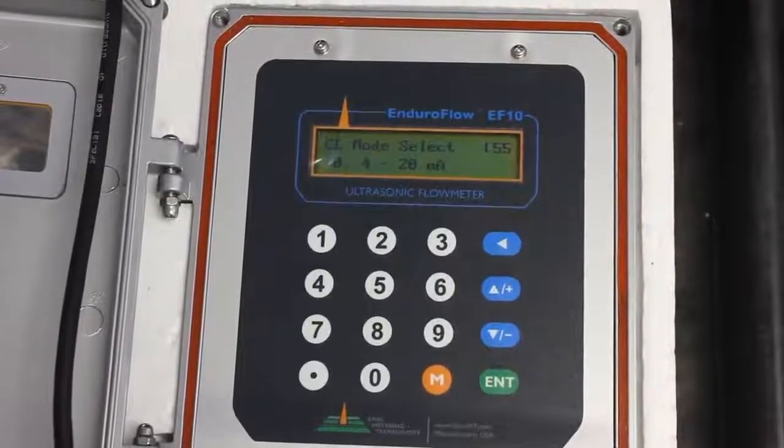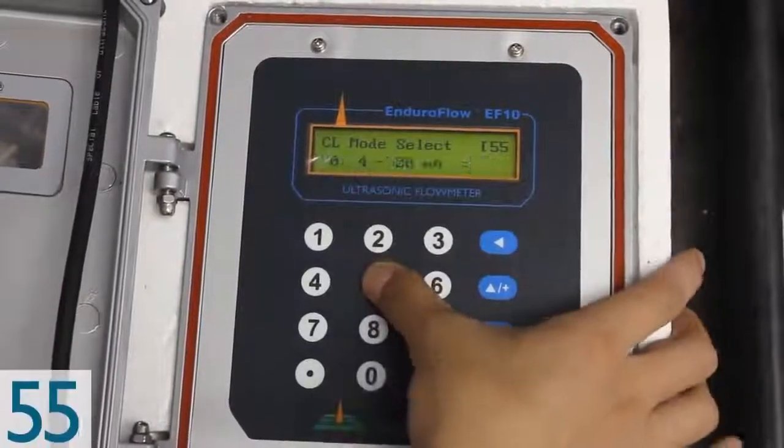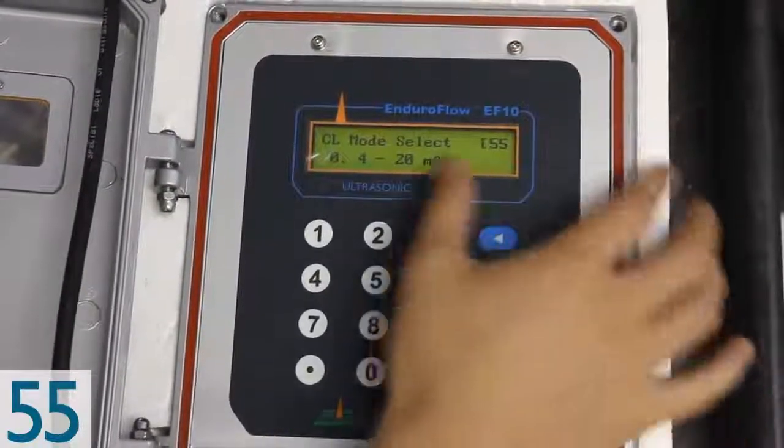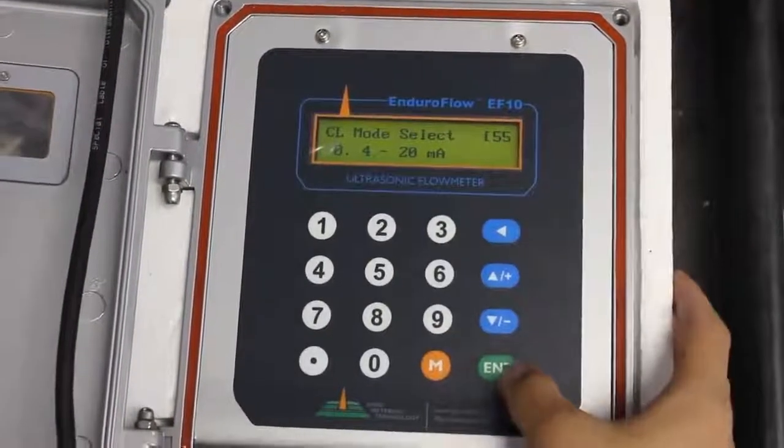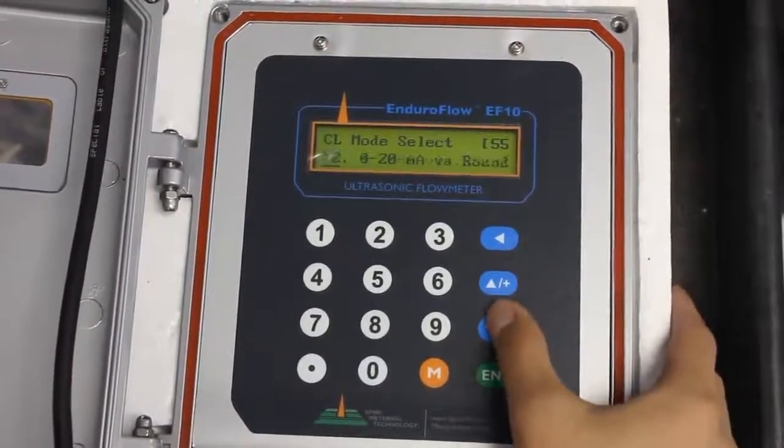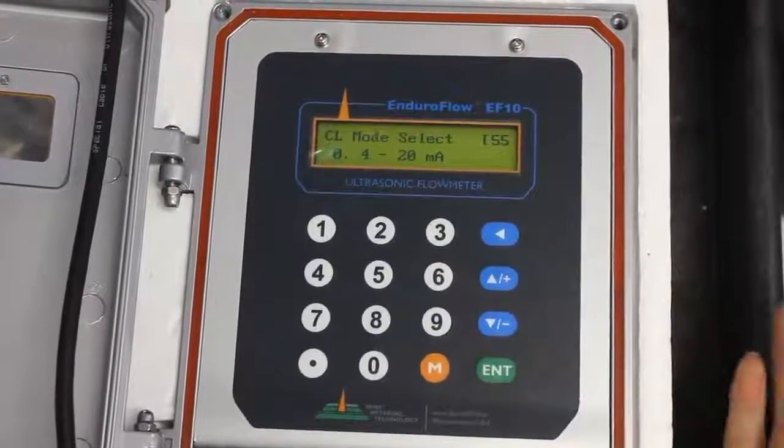Now we're going to talk about how to set up the 4-20 milliamp. Now here I'm at menu 55. And I've already selected the CL mode of 4-20 milliamp. You can change that to whatever's necessary, but we're just going to use the 4-20 milliamp.